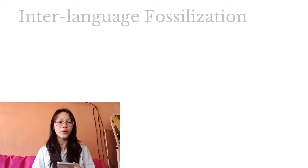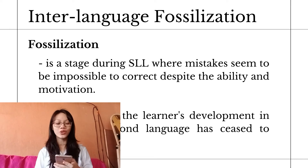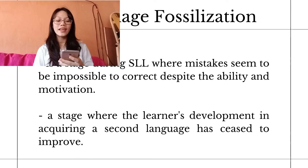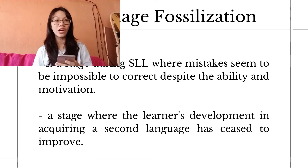My name is Jaya Francine E. Togle, your third reporter for this group. My topic is all about interlanguage fossilization. Interlanguage fossilization is defined as a stage during second language learning where mistakes seem impossible to correct despite the learner's ability and motivation. It is a stage where the learner's development in acquiring a second language has ceased to improve. This usually happens because of lack of correction, complacency of the learner, and inability to overcome fossilization itself. Such phenomena occur when people learning a second language keep applying rules from their native language incorrectly to the second language, resulting in a language system entirely different from both.